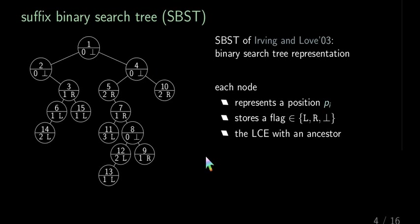The SBST is a binary search tree representation where each node represents a position Pi, one of these positions where a suffix has to start, which is stored in the top of each node. Then there is a flag, which is either L, R or bottom, which is stored on the lower right part. And each node stores the LCE with an ancestor, which is stored in the lower left part.